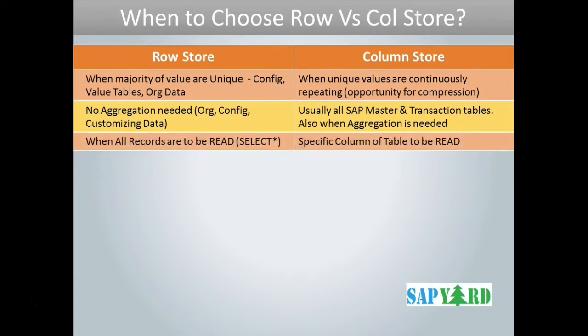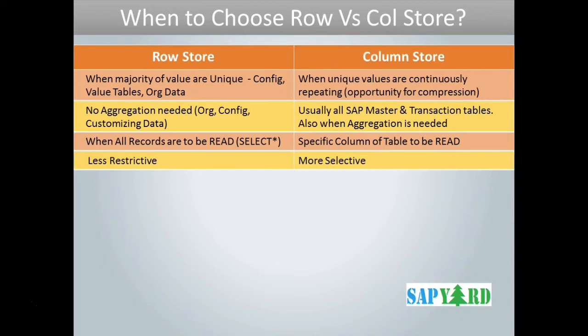When you want to read all columns of a table — that is, you want to do a SELECT * — never do it in column store; it has to be a row store table. When you need analysis of specific columns of a table, go for the column store. In other terms, rows are less restrictive and columns are more selective.